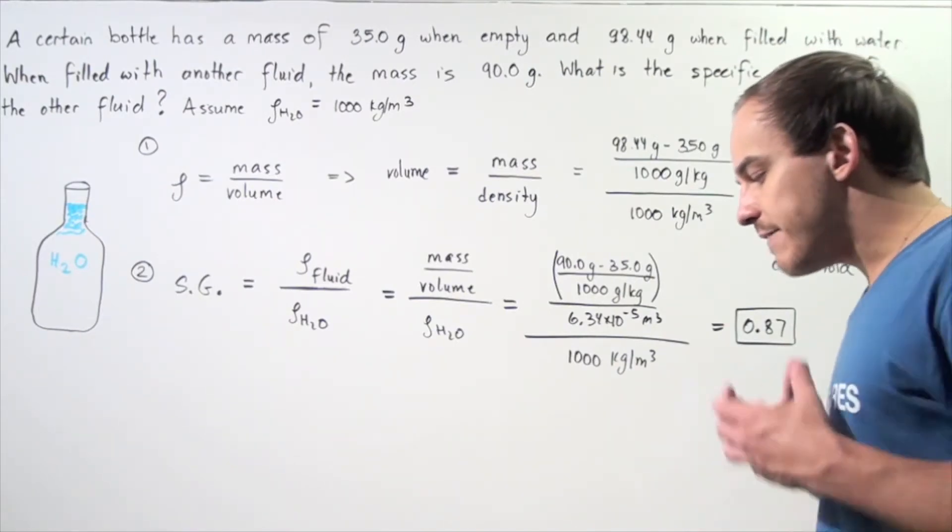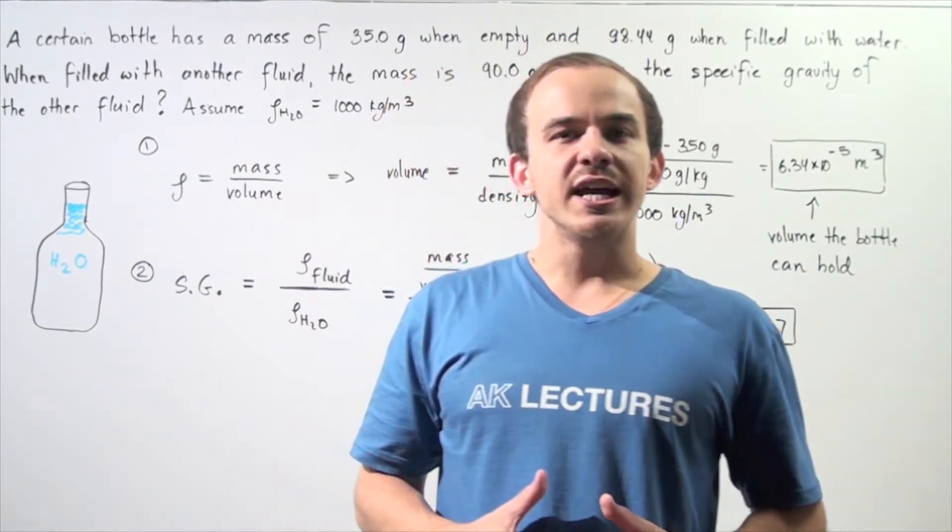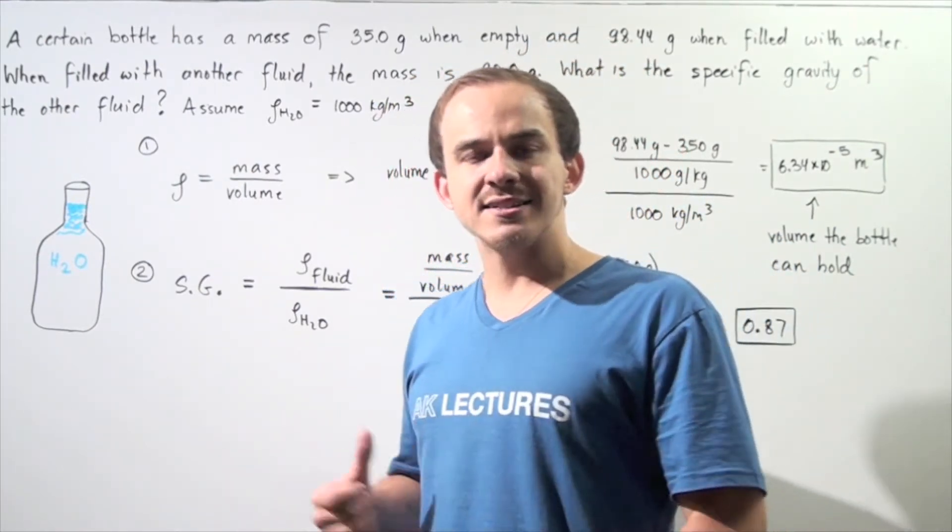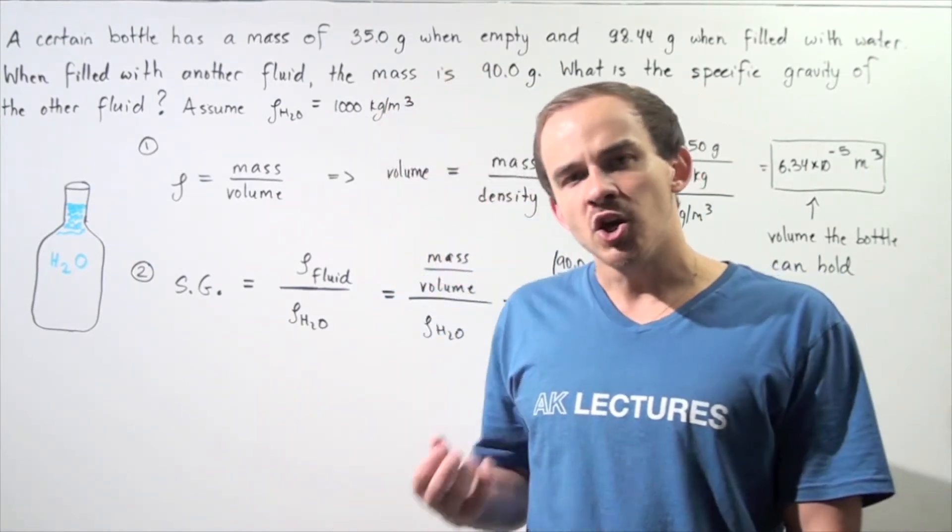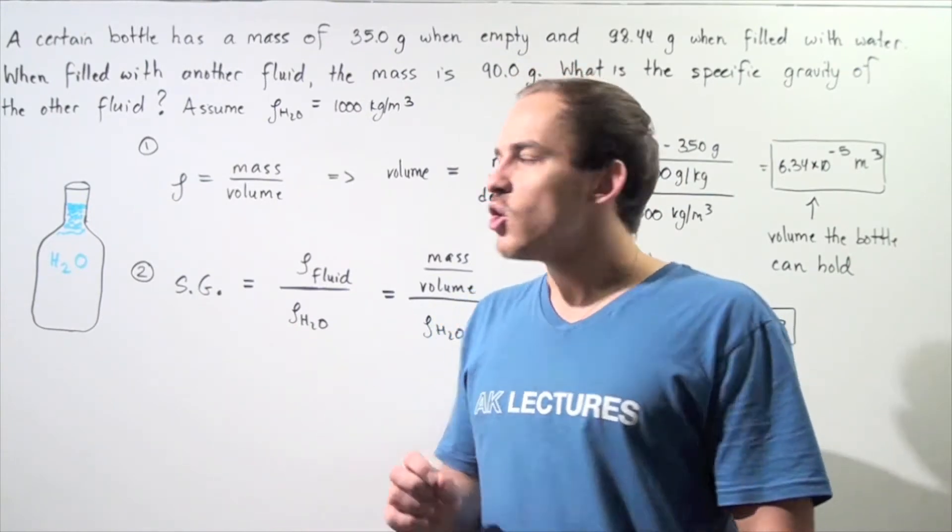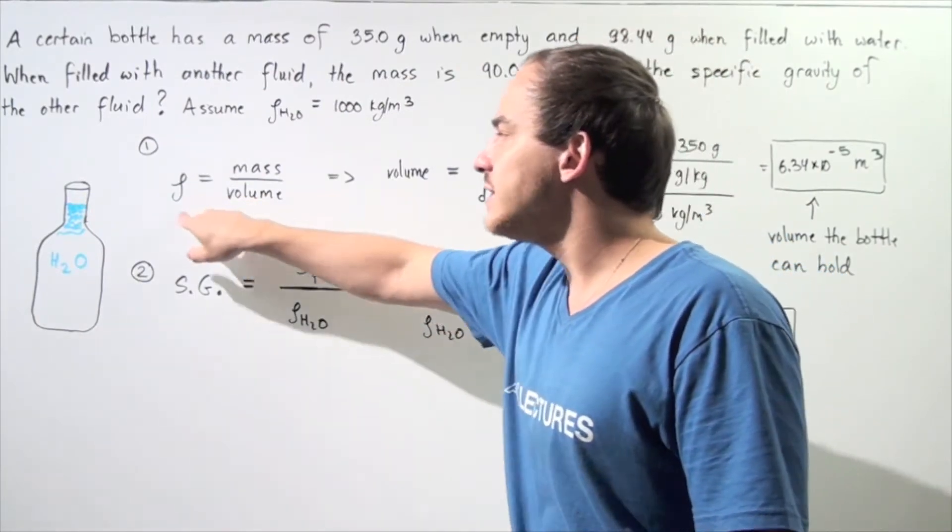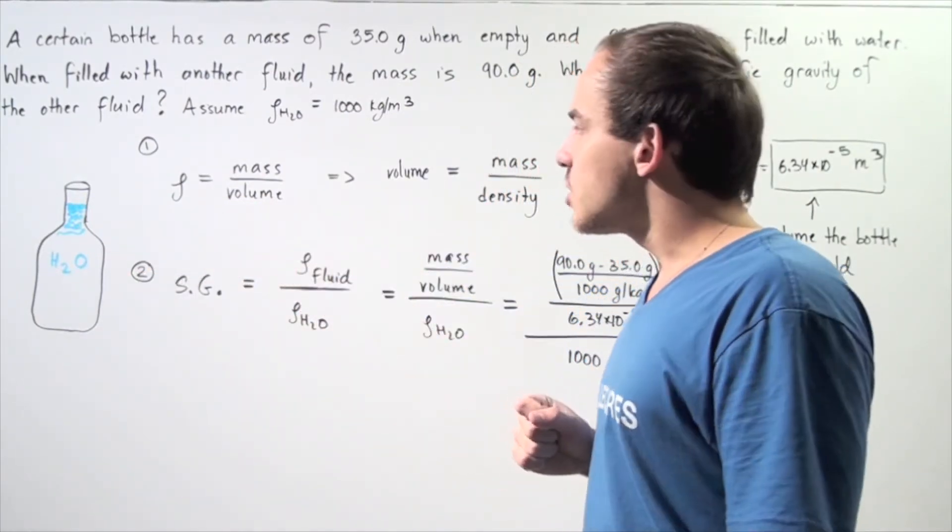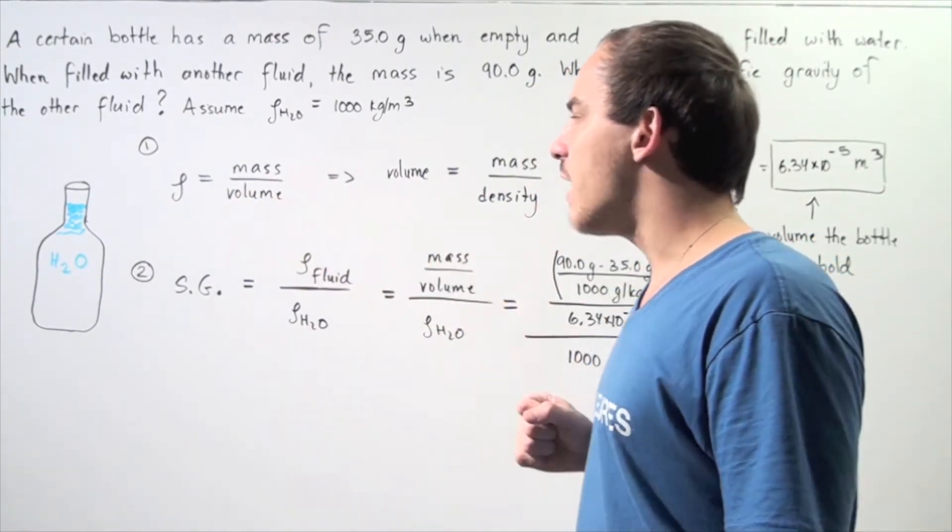Let's begin by first using our density equation to calculate what the volume capacity of the bottle is. In other words, what volume of fluid can our bottle hold? To calculate the volume, we're going to use the mass of the water inside the bottle and the density of water. We simply take this equation and rearrange and solve for volume.